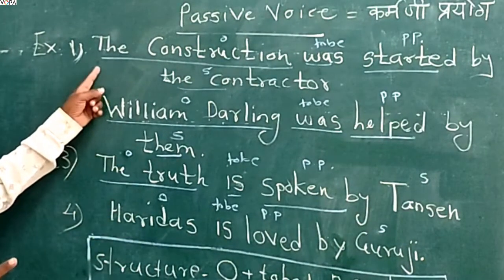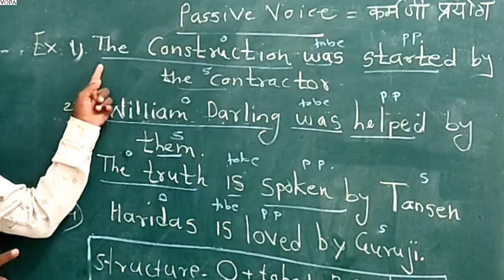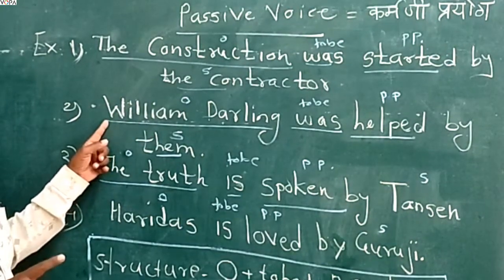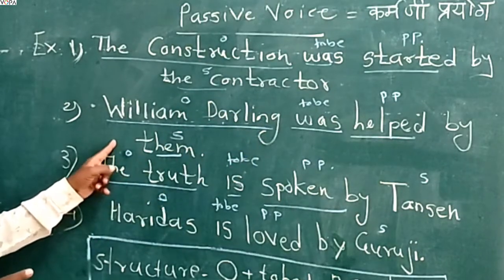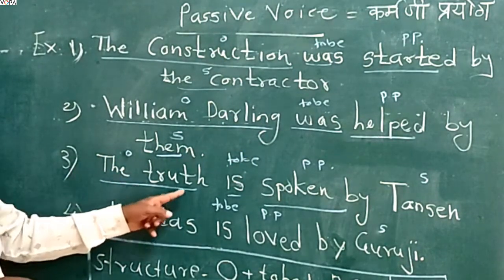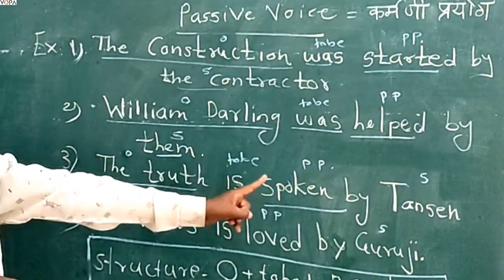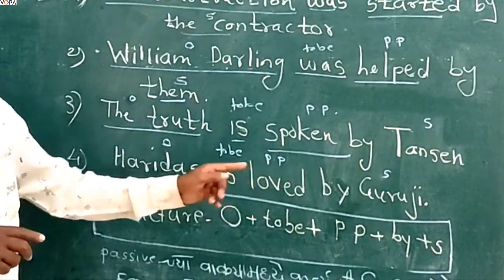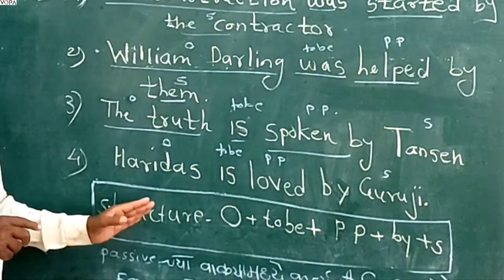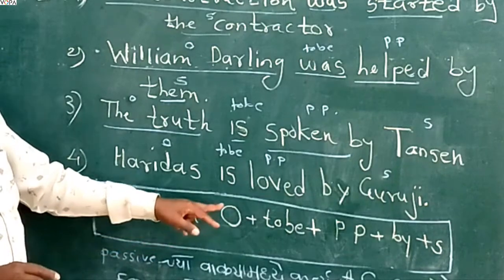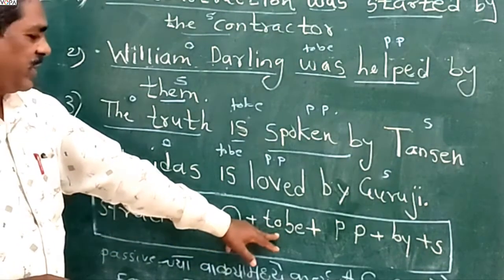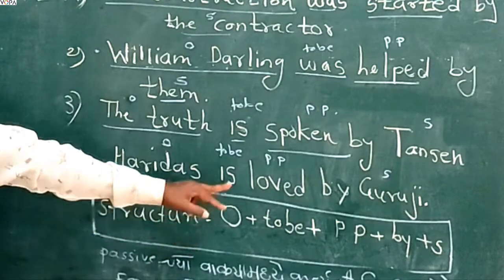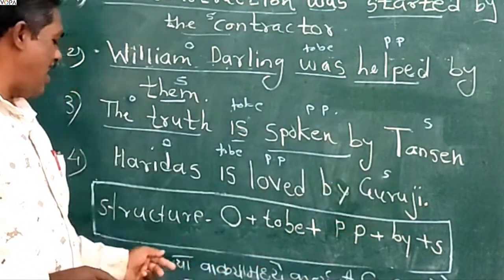For example: started by the contractor William Darling — he was helped by them. The third example: the truth is spoken by Tanssen. Next example: Haridat is loved by Guruji.